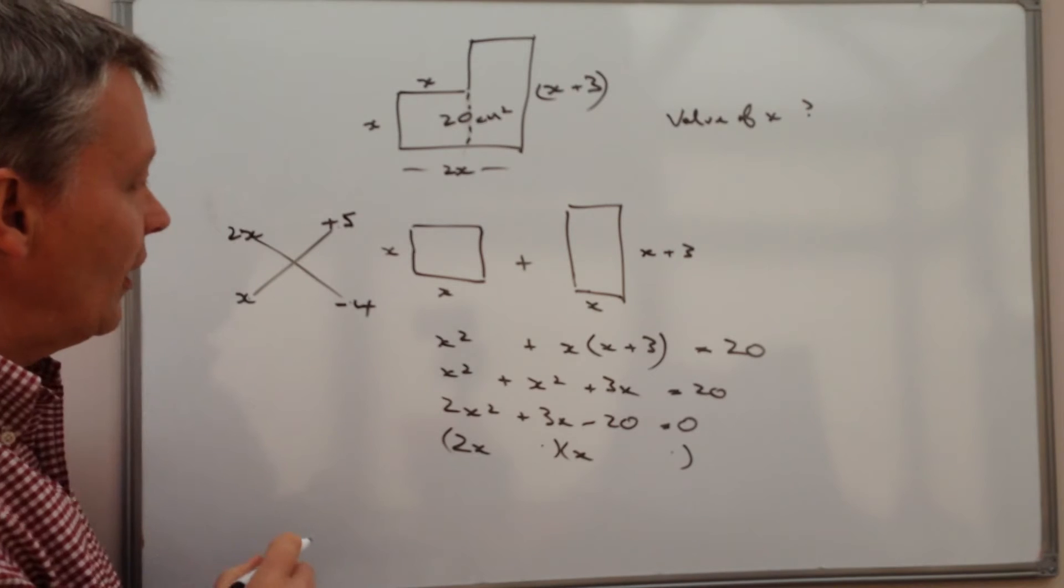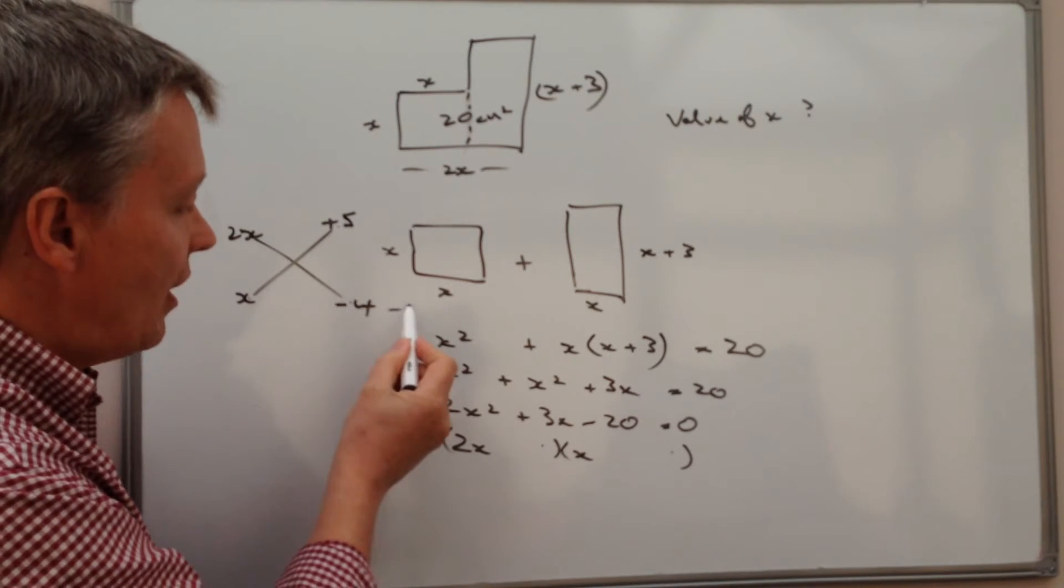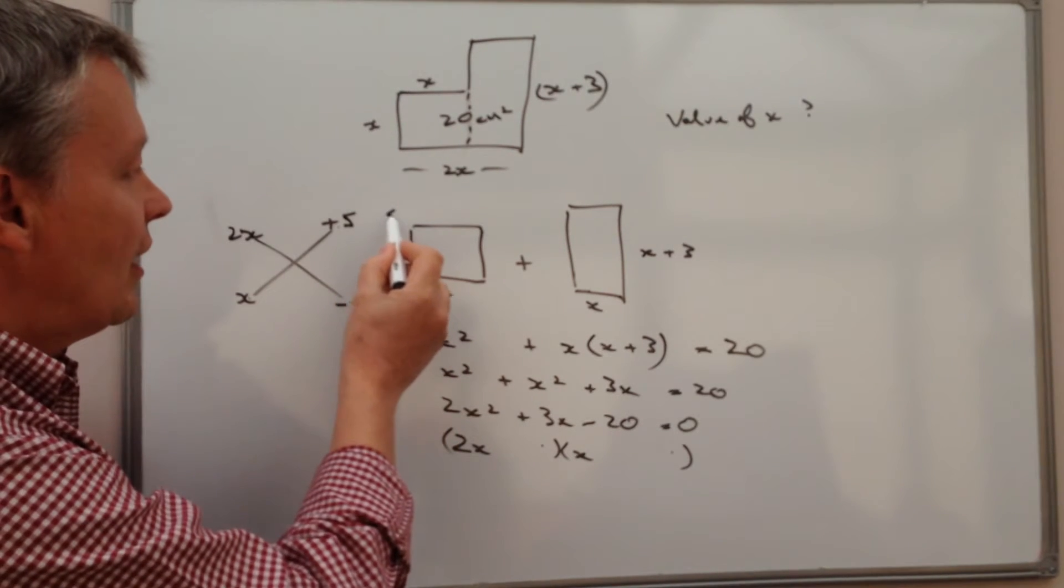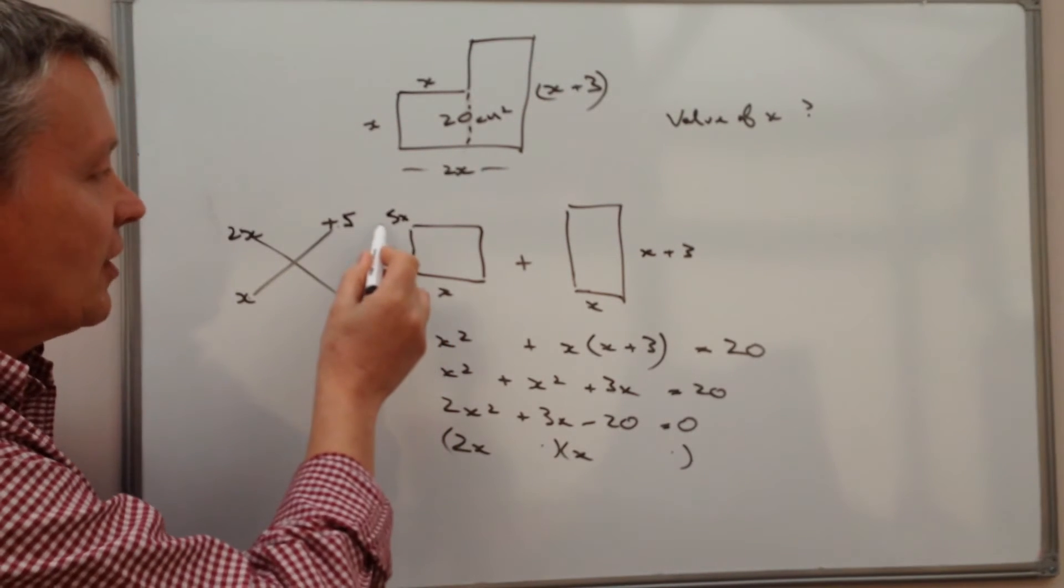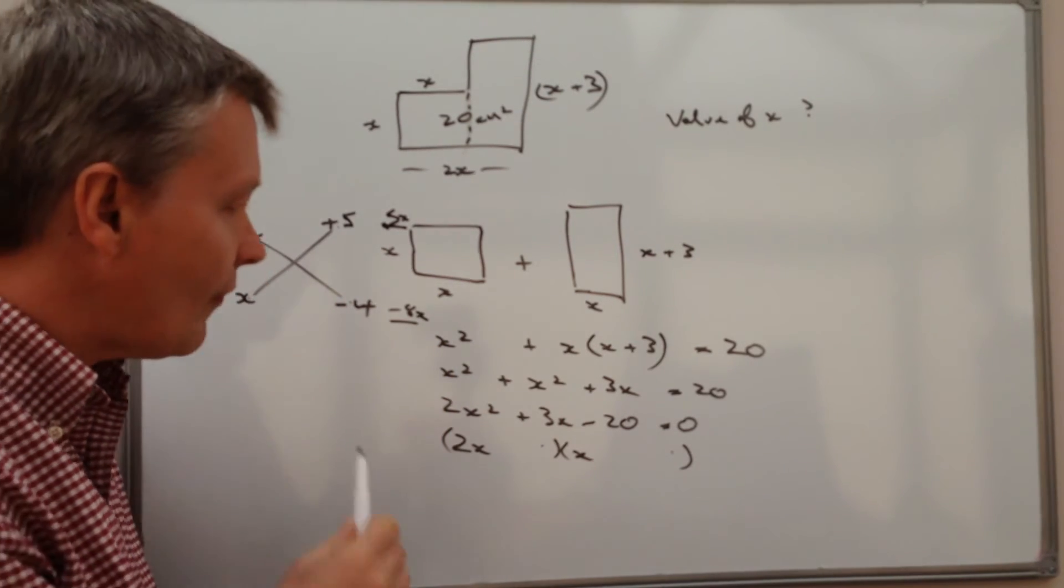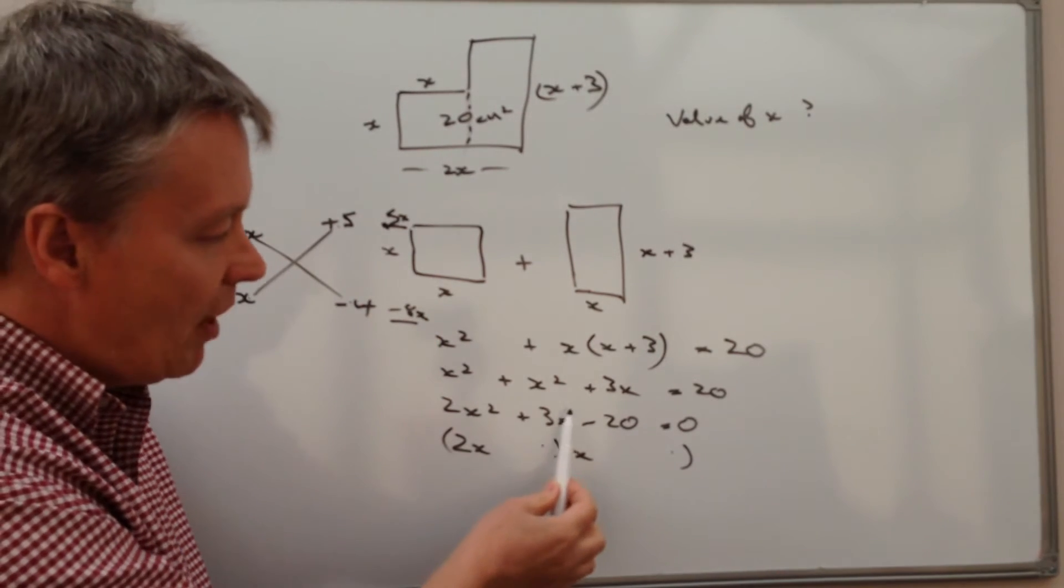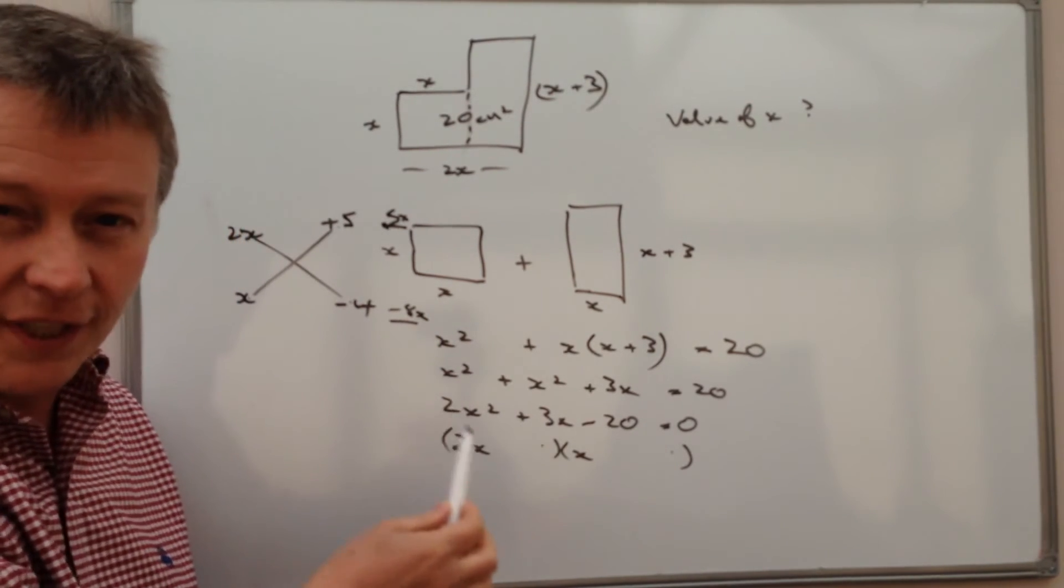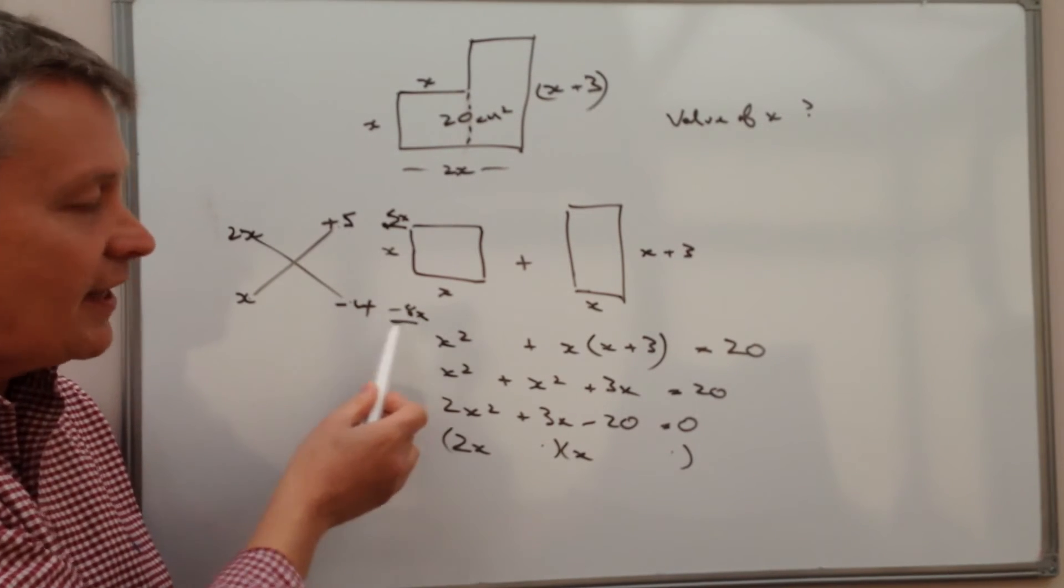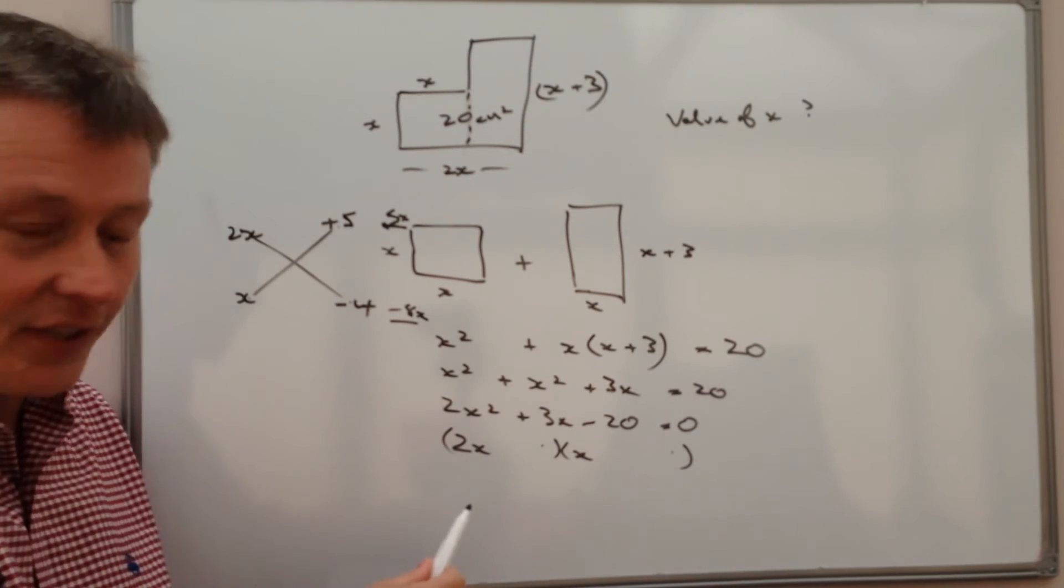Well, let's just multiply those out. So I've got 2x times minus 4 is minus 8x and I've got x times 5 is 5x. So 5x and minus 8x. The thing about that is if I add those two together I'm actually going to get minus 3x. So actually it's not going to work for me. 5x plus minus 8x is minus 3x. No, I need plus 3x.